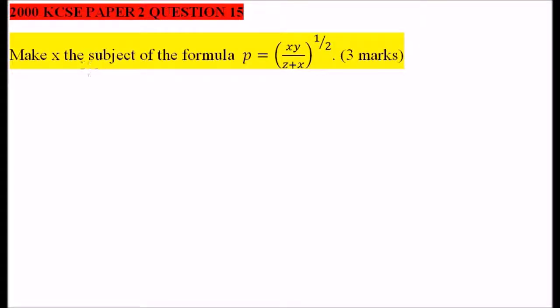This is 2000 KCSE paper 2 question number 15 from the topic formula and variation. We are supposed to make x the subject of this formula: p equals xy divided by z plus x, to the power of half. This question is worth 3 marks.